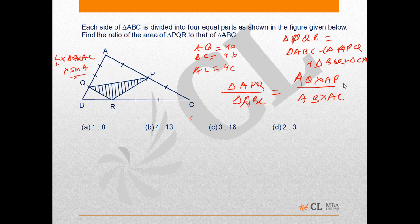The ratio equals 3A into 2C upon 4A into 4C, which equals 6 upon 16. Similarly, we can find the other ratios.